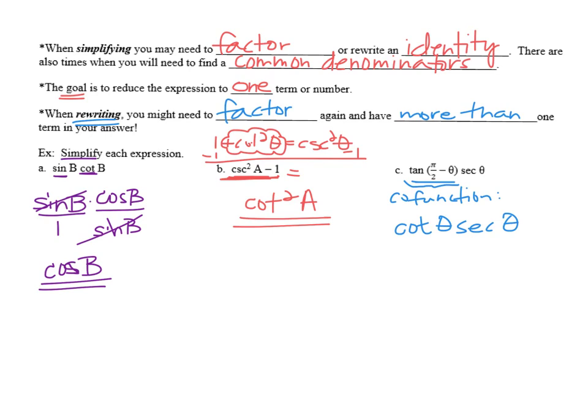However, cotangent does have a cosine and sine reference, and secant is the reciprocal of cosine. We can actually rewrite both of them. Cotangent is equivalent to cosine over sine. And secant is the reciprocal of cosine.